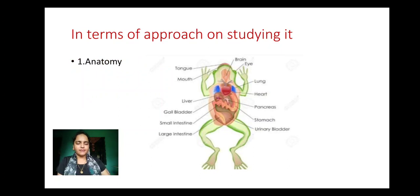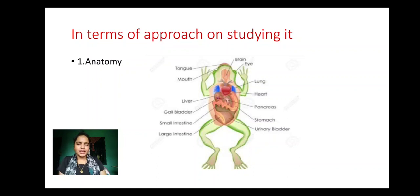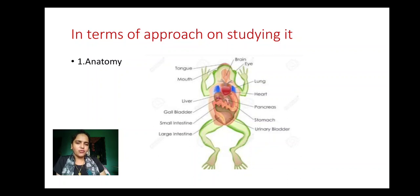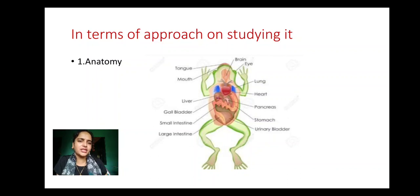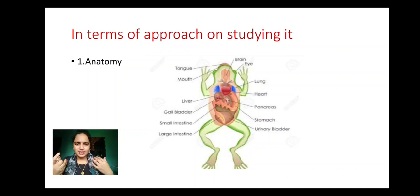Next we have different branches based on how we study an organism. The first one is anatomy. When we study an organism by dissecting it, it becomes anatomy. The figure on your screen is the anatomy of a frog — we have dissected the frog from its anterior position and we can study the different structures and organs present inside. So the study of an organism by dissecting it is called anatomy.